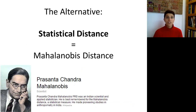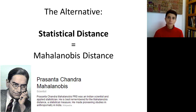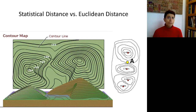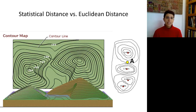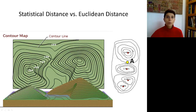The solution is using something called statistical distance, also known as Mahalanobis distance. If you search for Mahalanobis on Google, you'll find that he was an Indian scientist and applied statistician, best remembered for the Mahalanobis distance. He also founded the famous Indian Statistical Institute. One way to think about the difference between statistical and Euclidean distance is the analogy of aerial distances on a map versus a contour map that takes altitudes into account. Statistical distance takes into account the whole terrain of the predictor distributions.